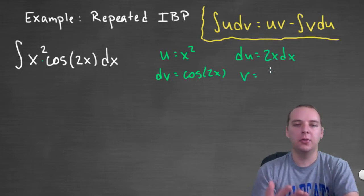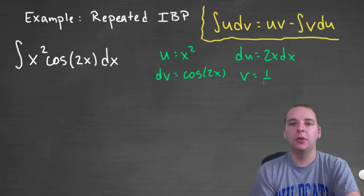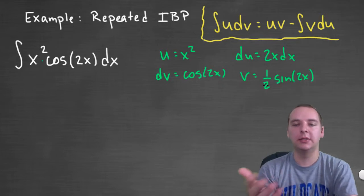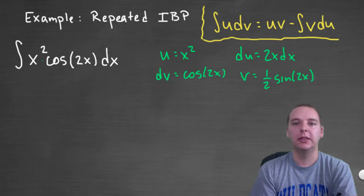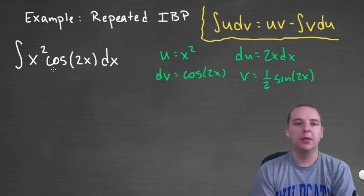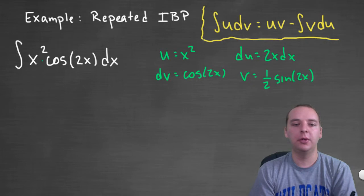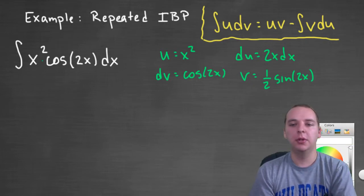The du will be 2x dx, and the v without going through a lot of algebra will be one half sine 2x. And I'm not really going to explain too much of why these things are what they are. These are just basic integrals and derivatives to get these things. I hope that we know how to do this basic stuff so we can focus on the main task here. So here we go, we have our four terms here, I'm ready for integration by parts. So let me plug these guys in and see what we get.